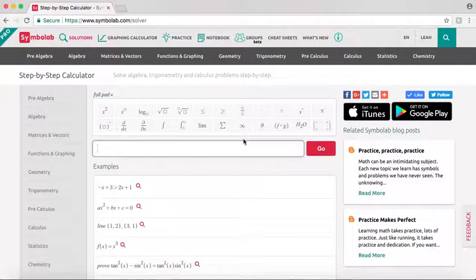The scientific pad allows you to easily type in the math problem you want to solve. Here we have the compact pad, which has more of the commonly used operators and symbols.